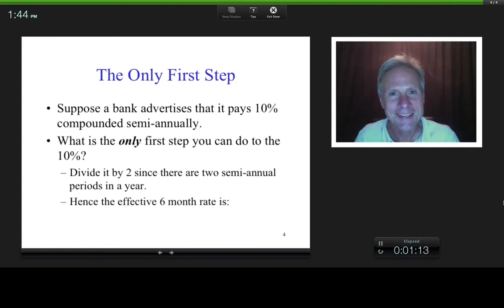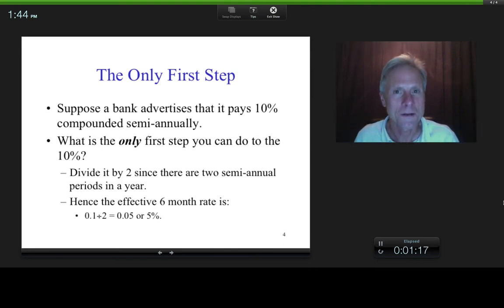In which case we have 5%. And what do you think that 5% is? Well, the 5% is the effective six-month rate, which is what? The amount of interest made from $1 after how long? Six months.